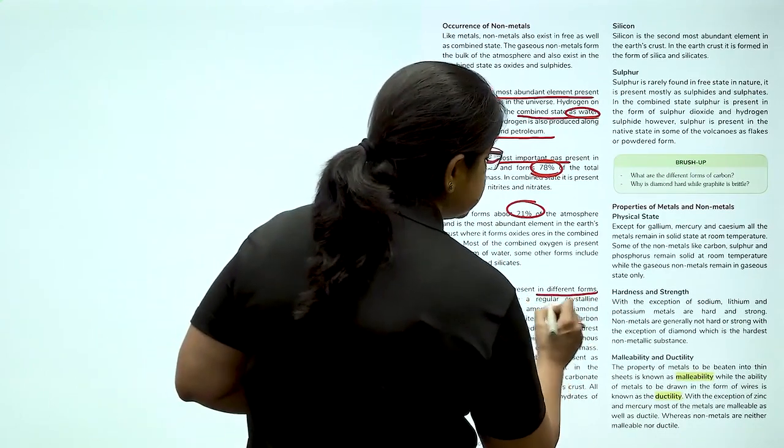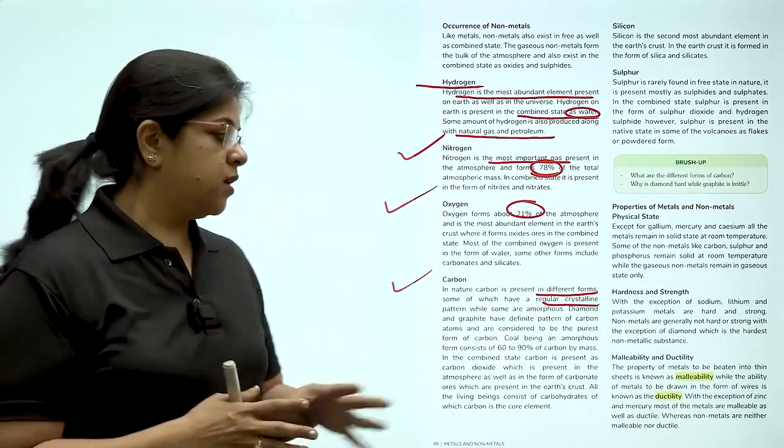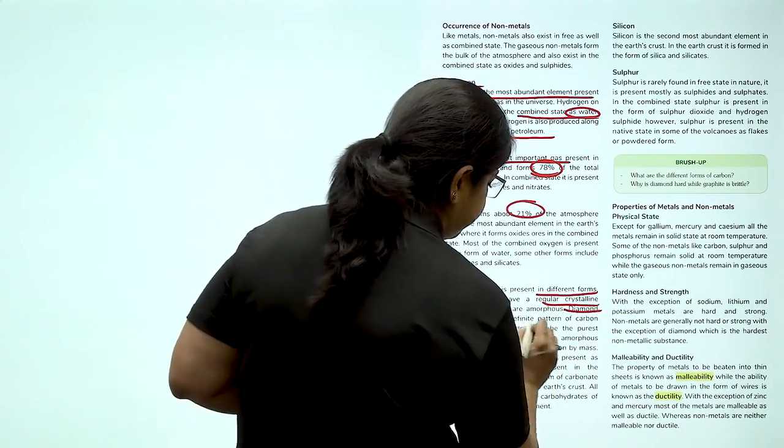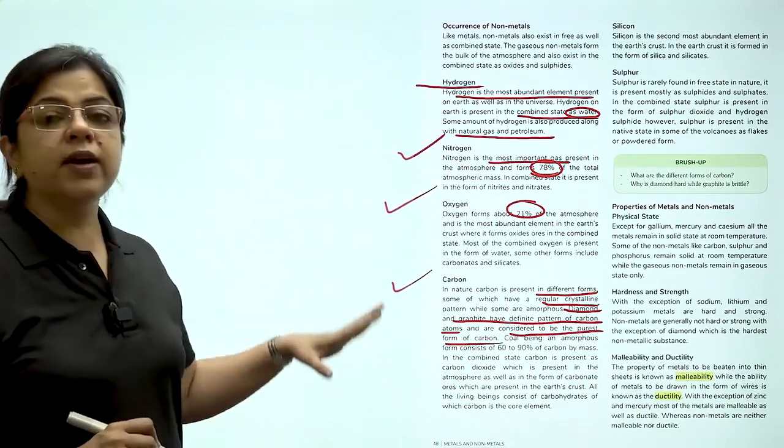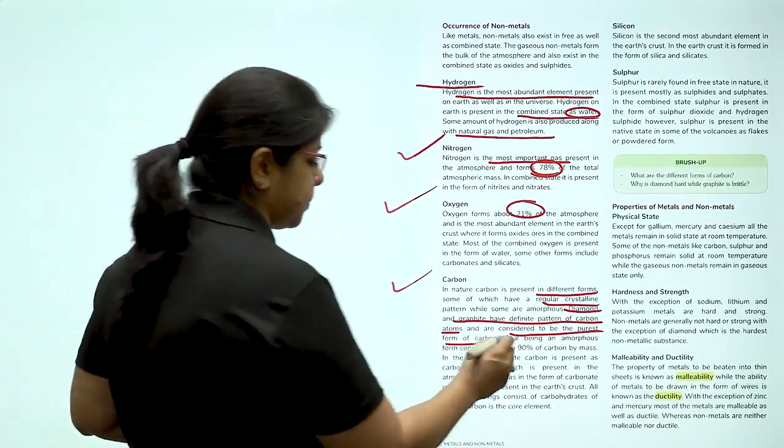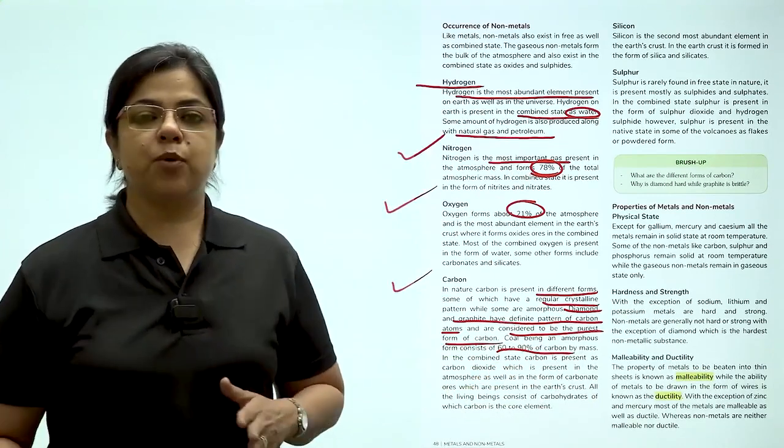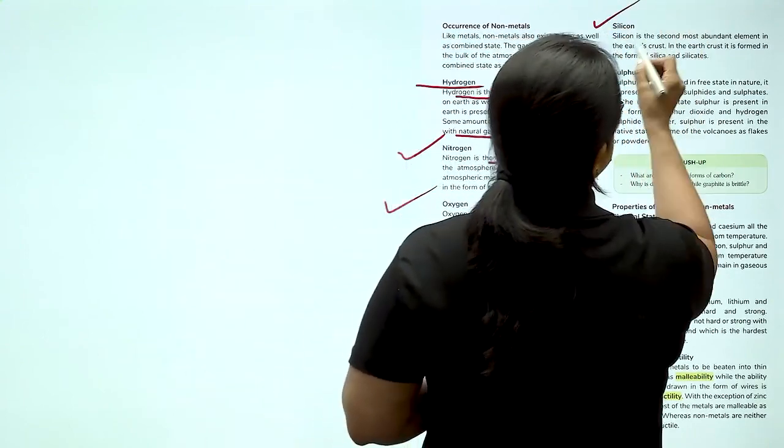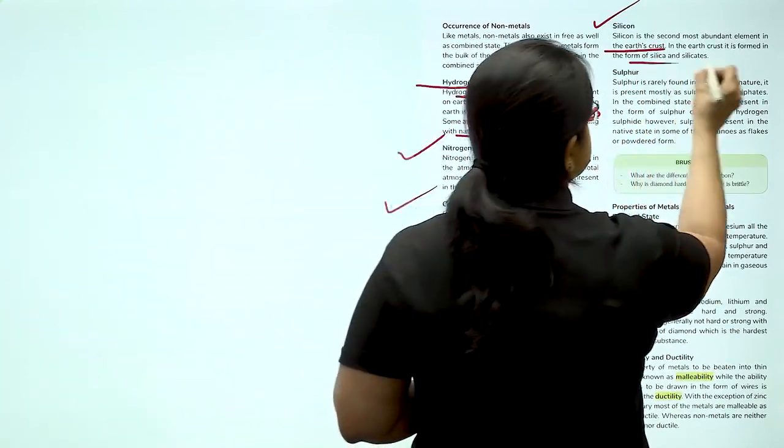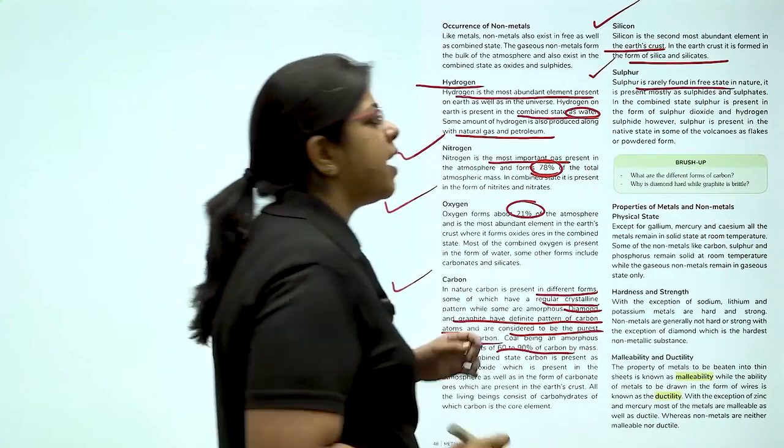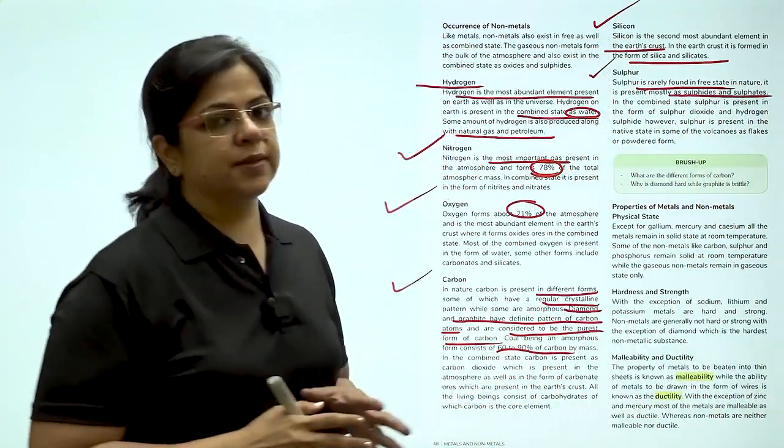Carbon is present in crystalline pattern or it is present as a mineral. Diamond and graphite have a definite pattern of carbon atoms and they are considered to be the purest form of carbon. Coal is an amorphous form of carbon which contains 60 to 90% of carbon depending on the type of coal. Coming next to silicon, silicon is readily available in the earth's crust in the form of silica and silicates. Sulphur is rarely found in free state. It is usually found as sulfites and sulfates.